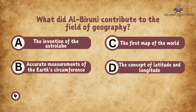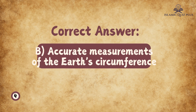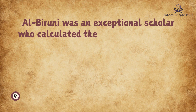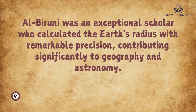Question 4: What did Al-Biruni contribute to the field of geography? A. The invention of the astrolabe, B. Accurate measurements of the Earth's circumference, C. The first map of the world, D. The concept of latitude and longitude. The correct answer is B. Al-Biruni was an exceptional scholar who calculated the Earth's radius with remarkable precision, contributing significantly to geography and astronomy.